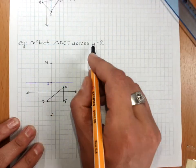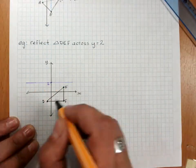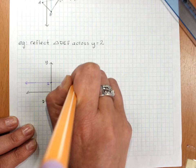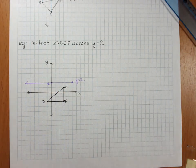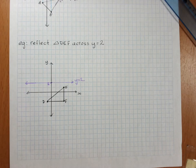And remember, a y equals line is a horizontal line. We could get a vertical one if it was an x equals.